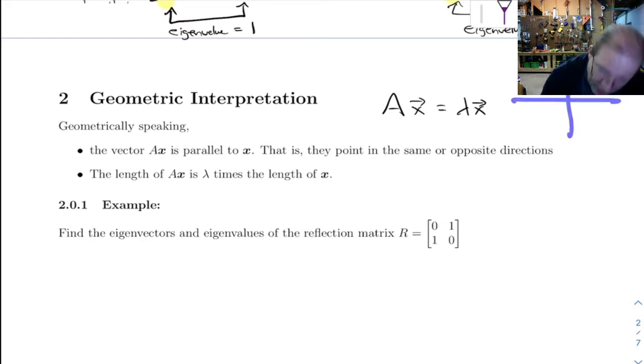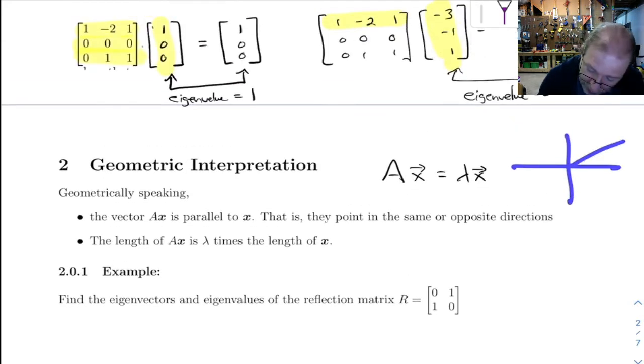If this were an eigenvector, when you multiply it by the matrix, it might stretch it or shrink it depending on whether the eigenvalue is bigger or smaller than 1. And if it's negative, it might reverse its direction.